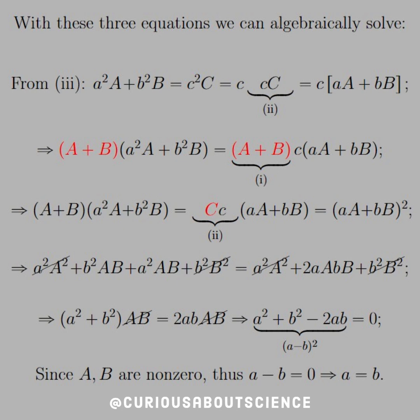All right, so if we start from equation 3, what we see is that we have little a squared, big A, plus little b squared, big B, is equal to c squared, big C. So if we separate that little c squared into c times little c times big C, well, the little c times big C, we can substitute in equation 2 into that.